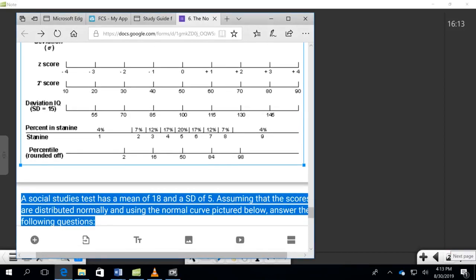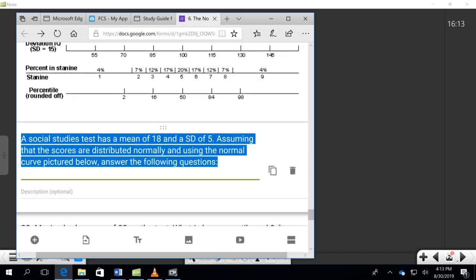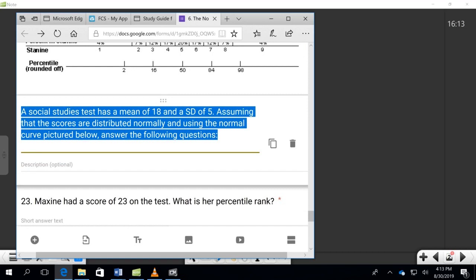A social studies test has a mean of 18 and a standard deviation of 5. Assuming that the scores are distributed normally and using the normal curve pictured above, answer the following questions. Maxine had a score of 23 on the test. What is her percentile rank?